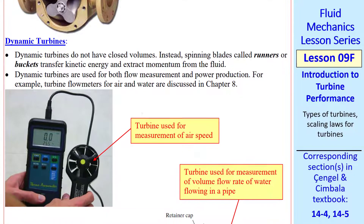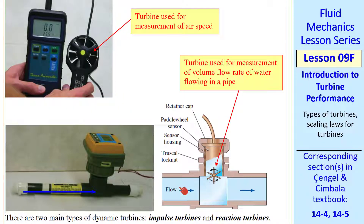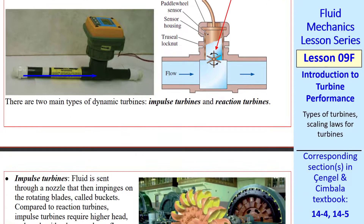We'll spend more time on dynamic turbines. This is very similar to dynamic pumps, so I'll go through this quickly. Dynamic turbines do not have closed volumes like positive displacement turbines do. Instead, they have spinning blades called runners or buckets that transfer kinetic energy. Dynamic turbines can be used for flow measurement or power production. There are two main types: impulse turbines and reaction turbines.